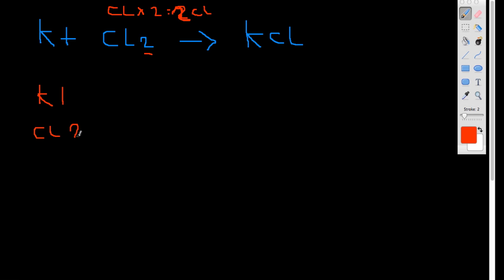So on the other side of the equation — this arrow separates the equation if you didn't know that — let's write a little dotted line so you can see. On the other side we have one K. Remember, we find out all the individual elements. So we have K here and there's one of them. Cl this time has nothing multiplying it, so there's only one of them — imagine there's a little 1 there.